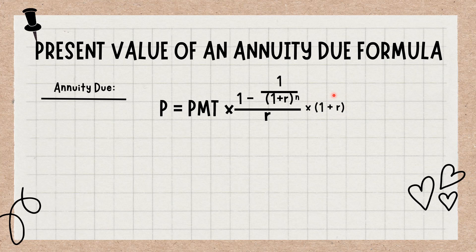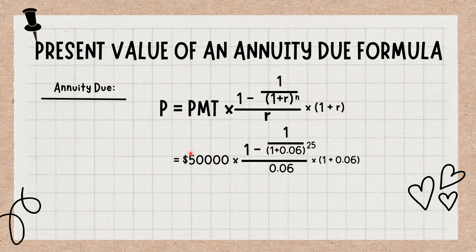If the example above referred to an annuity due rather than an ordinary annuity, its value would be as follows: P equals $50,000 multiplied by 1 minus 1 divided by 1 plus 0.06 to the power 25, divided by 0.06, multiplied by 1 plus 0.06, which equals $677,518. In this case, the person should choose the annuity due option because it is worth $27,518 more than the $650,000 lump sum. The present value of an annuity can be used to determine whether it is more beneficial to receive a lump sum payment or an annuity spread out over a number of years.